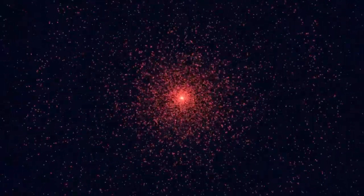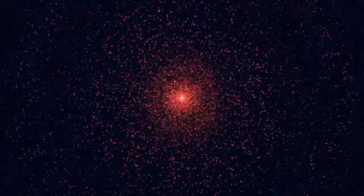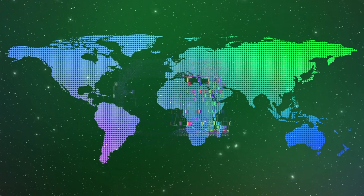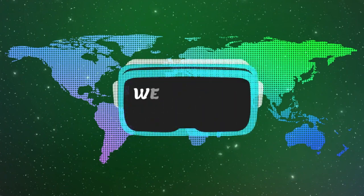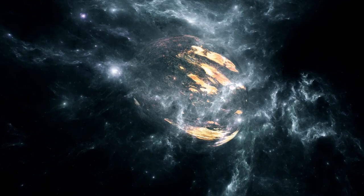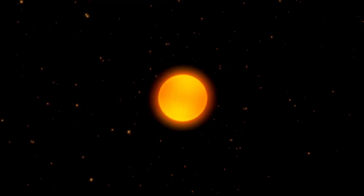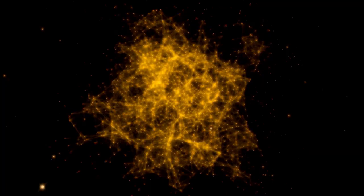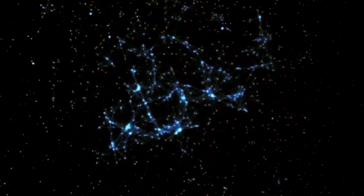This violent process, referred to as spaghettification, stretches matter into elongated filaments reminiscent of strands of pasta. The gravitational gradient is so intense that it rips apart the internal structure of the object, which is then absorbed into the singularity at the black hole's core.